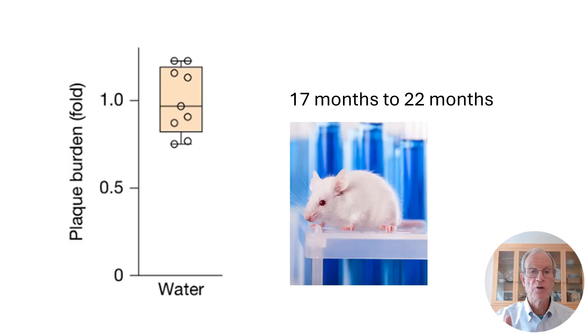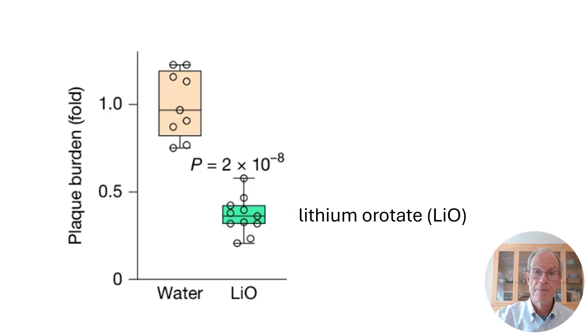With just the regular water, this is the amount of plaque. Now, remember, they'd formed it by age 17 months, and we're looking now at age 22 months, and that plaque is still there. What if they had been getting lithium orotate from age 17 to age 22? How much plaque do they have then? Less than half as much. So the authors of this paper submit that this shows that lithium orotate is actually reversing the plaque development in these Alzheimer's-prone mice.